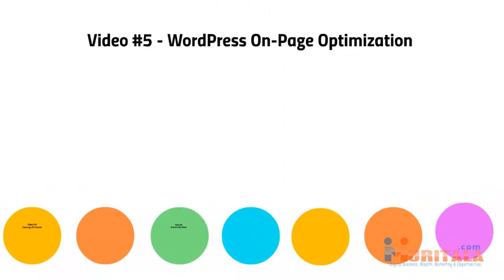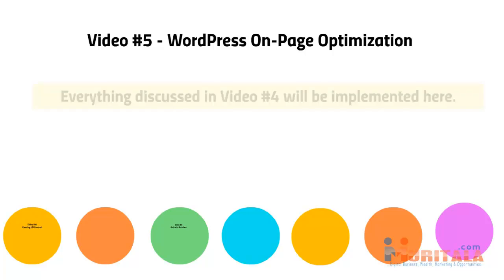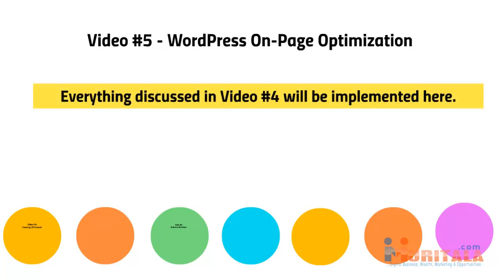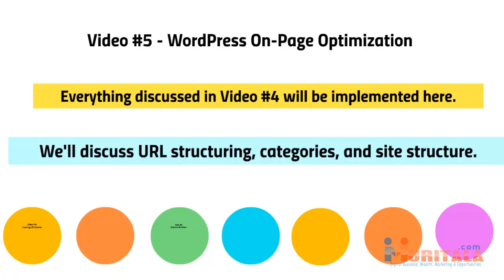Hello and welcome to video number five. We are going to talk about WordPress on-page optimization and implement everything that we discussed in video number four. We'll be discussing URL structuring, categories, as well as site structure. I assume that you will have a WordPress site available. So if you want to go ahead and log in and follow along, or watch till the end and follow later, that's fine. We're going to go ahead and log in to a live WordPress site, and I'll walk you through step-by-step.